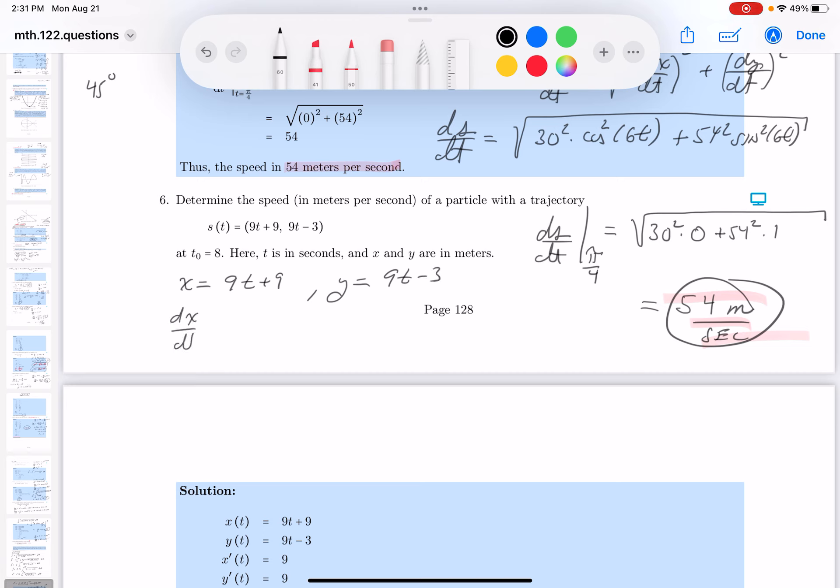dx dt is going to be equal to 9, and dy dt is going to be equal to 9. What do I want? I want ds dt at a particular time, by the way. Let's just write this down.